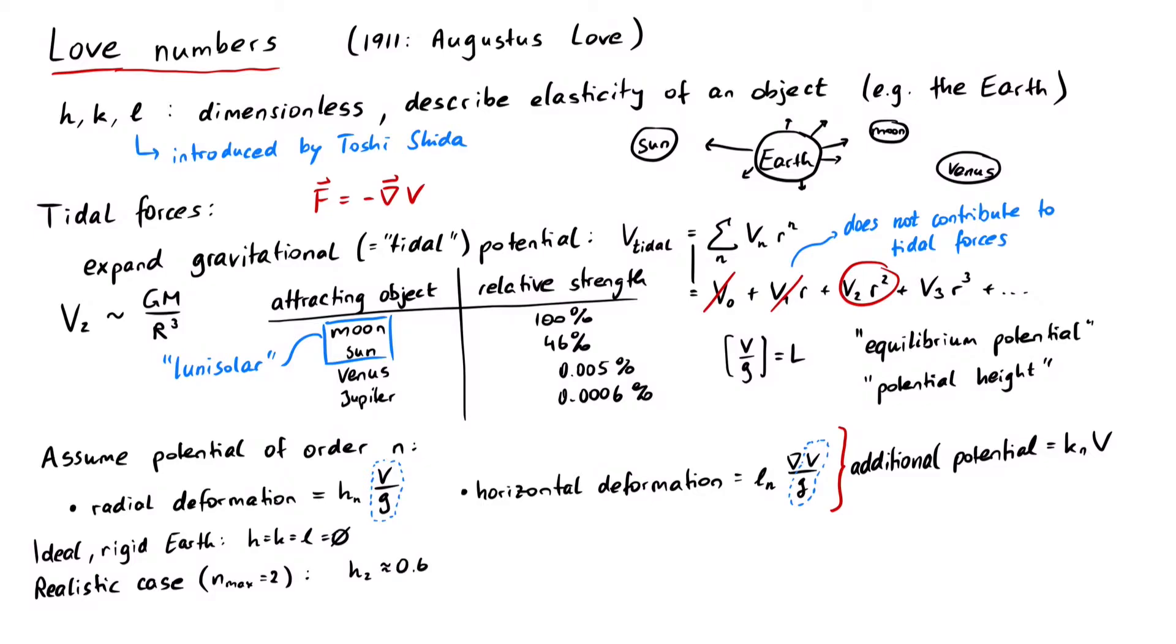then h2 is about 0.6, l2 is about 0.084, and k2 is around 0.3. Remember, since h2 gives us the radial deformation, we deduce that the earth's surface moves about half a meter up and down in the daily rhythm of the tides.